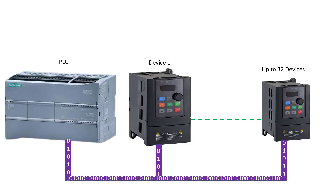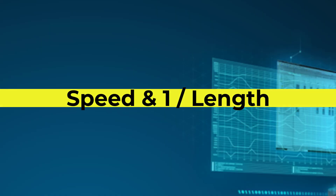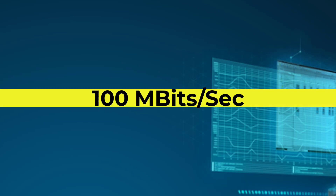RS-485 can connect up to 32 slave devices, and its speed is 10 megabits per second. One important thing to understand: basic physics applies here — speed is inversely proportional to cable length. You will get maximum speed only at around 6 meters of cable length.